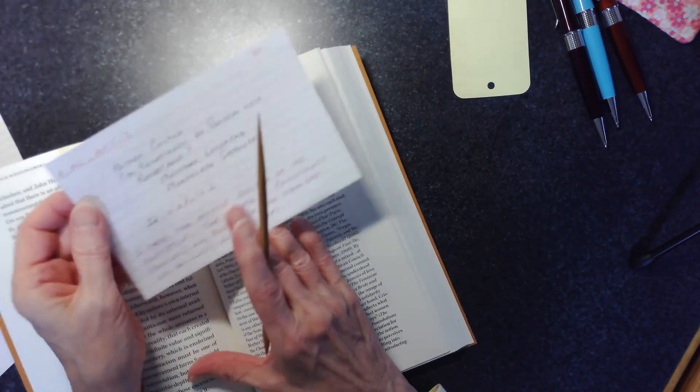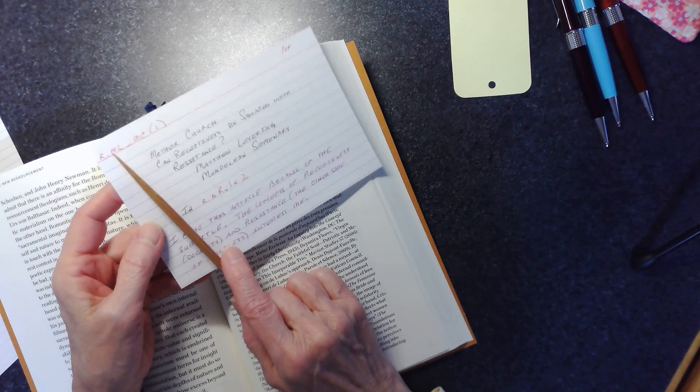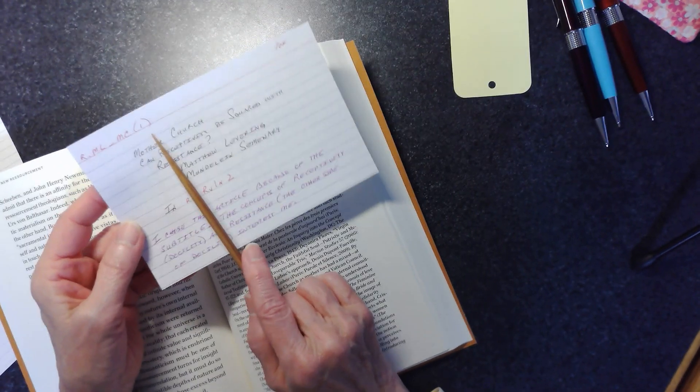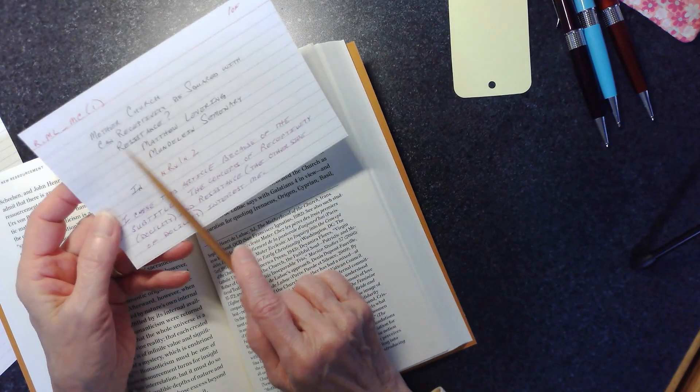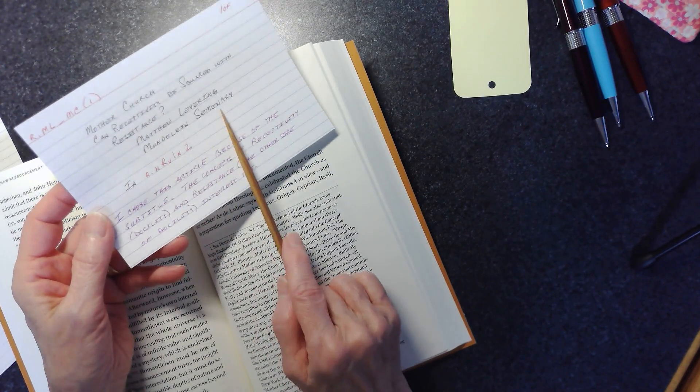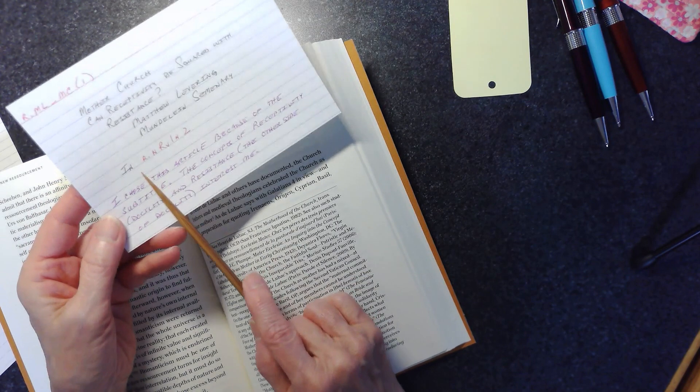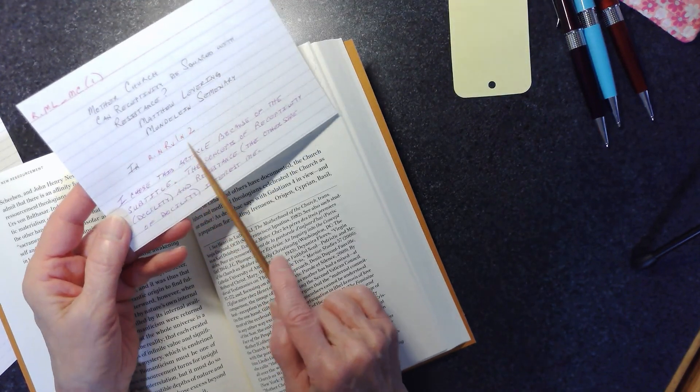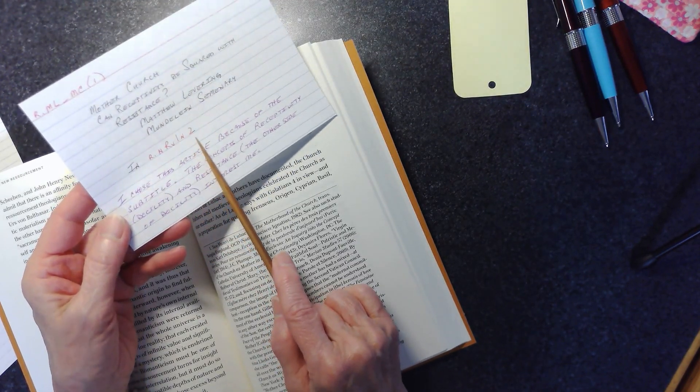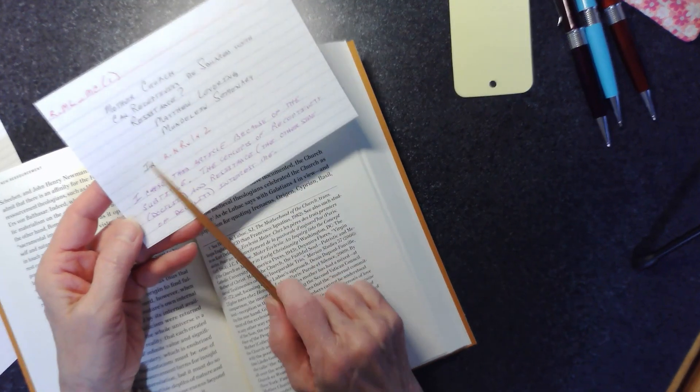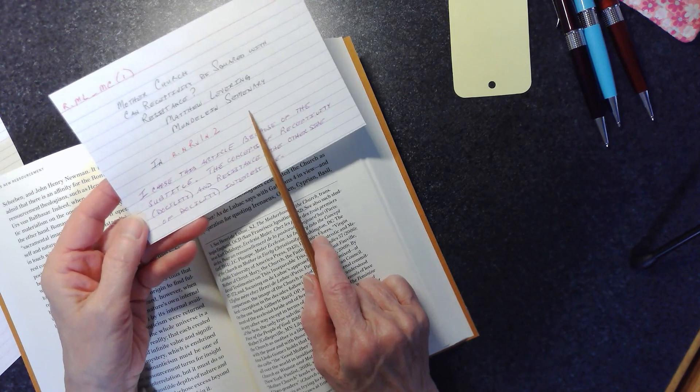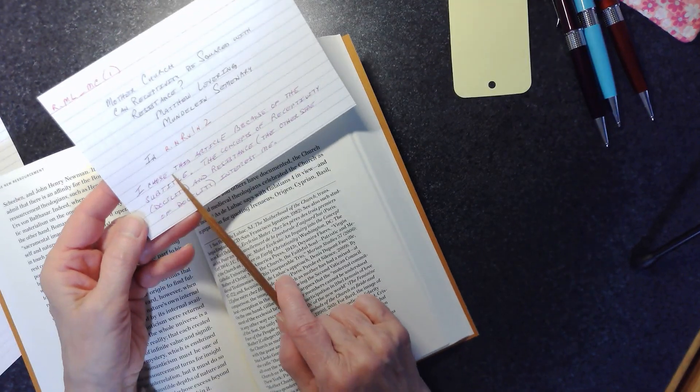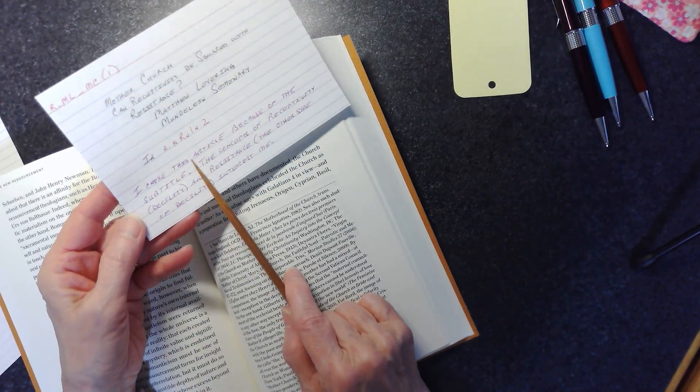So then here's the first bib card. The bib card has the same nickname. It includes the title of the article and the subtitle and the author. And it also says in which journal, the nickname of the journal that it's present. Now, one of the other things that I like to always do with a bib card is include why I'm reading this particular article.